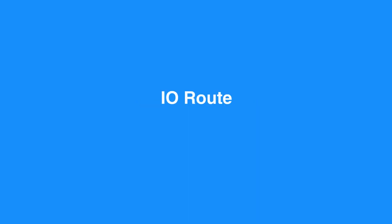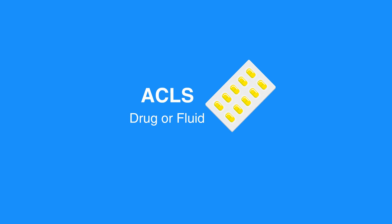High quality CPR helps circulate these drugs and is an important part of resuscitation. The IO route is used to deliver drugs and fluid safely and effectively during resuscitation when IV access is not available. IO access can be used for all age groups, can be placed in less than one minute, and has more predictable absorption than the ET route. Any ACLS drug or fluid that can be administered intravenously can also be given intraosseously.